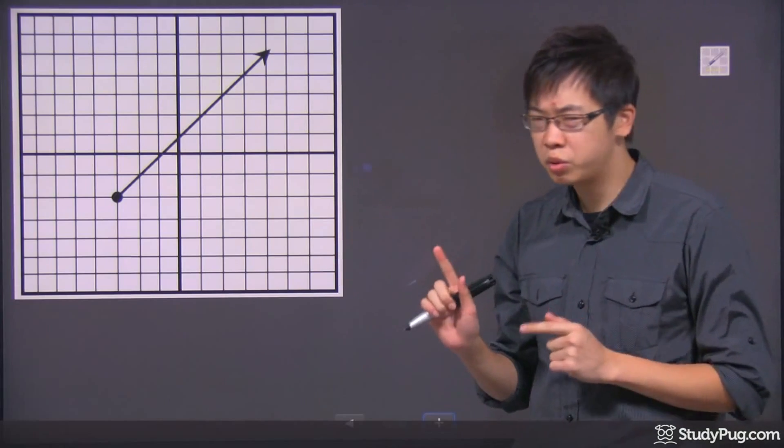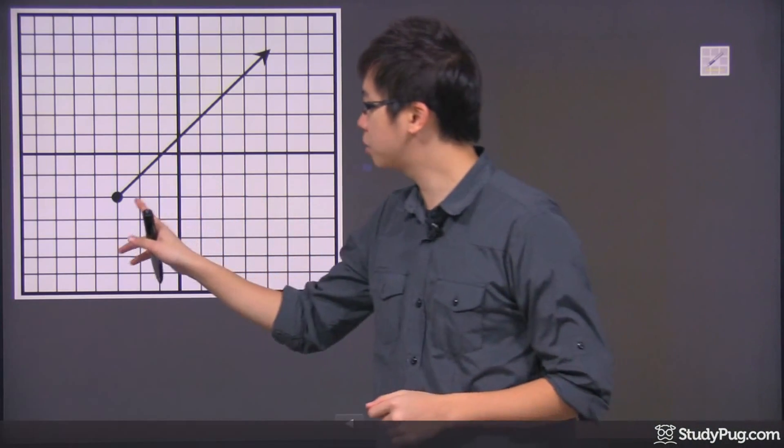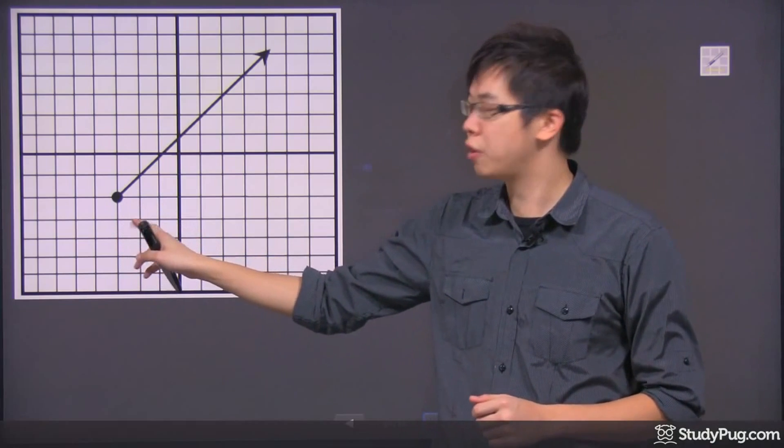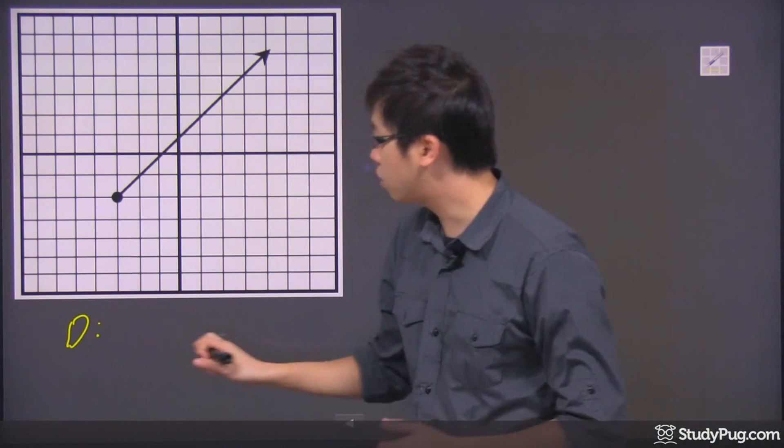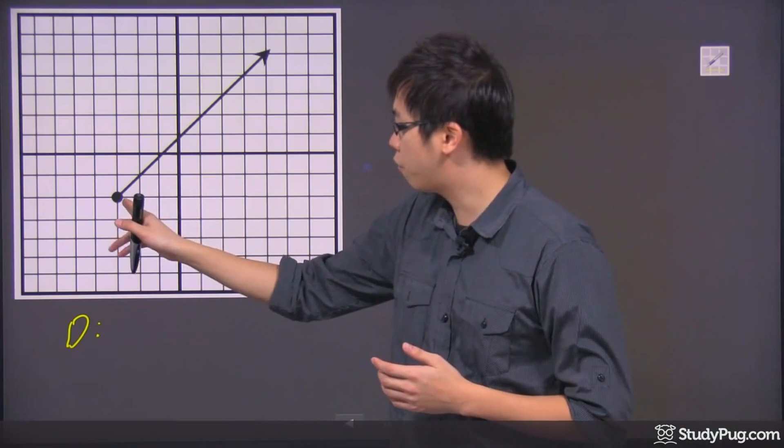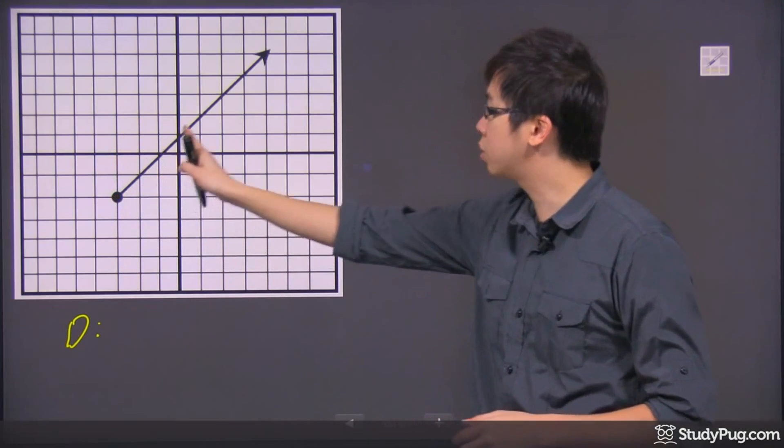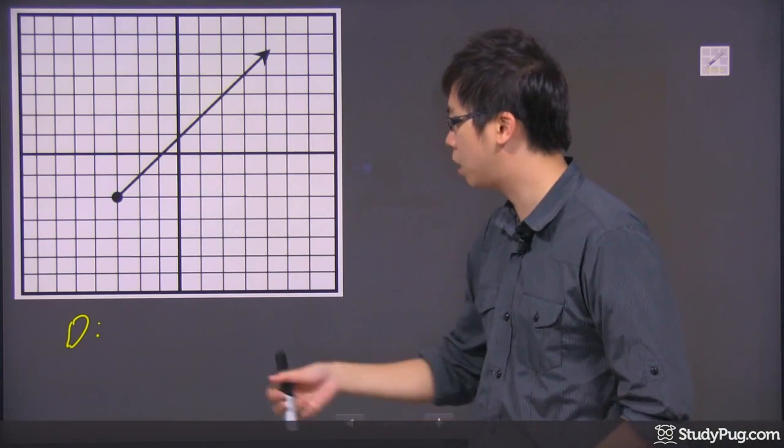The domain for this one is a little tricky because it seems to start specifically at this point right here. So if I'm going to do the domain down here, I'm going to say that it's starting from negative three and towards the right infinitely. So how do I do that in terms of domain?